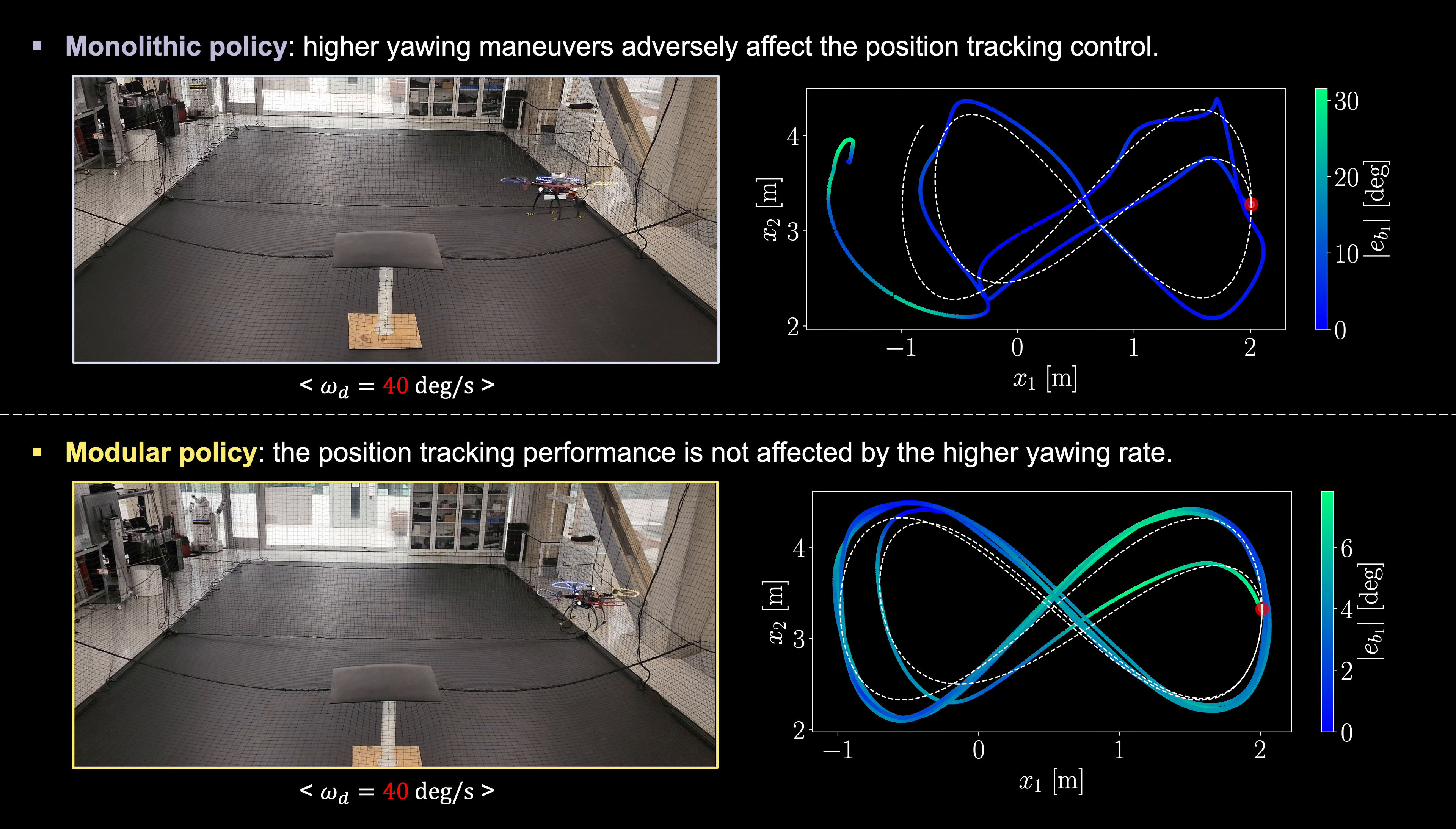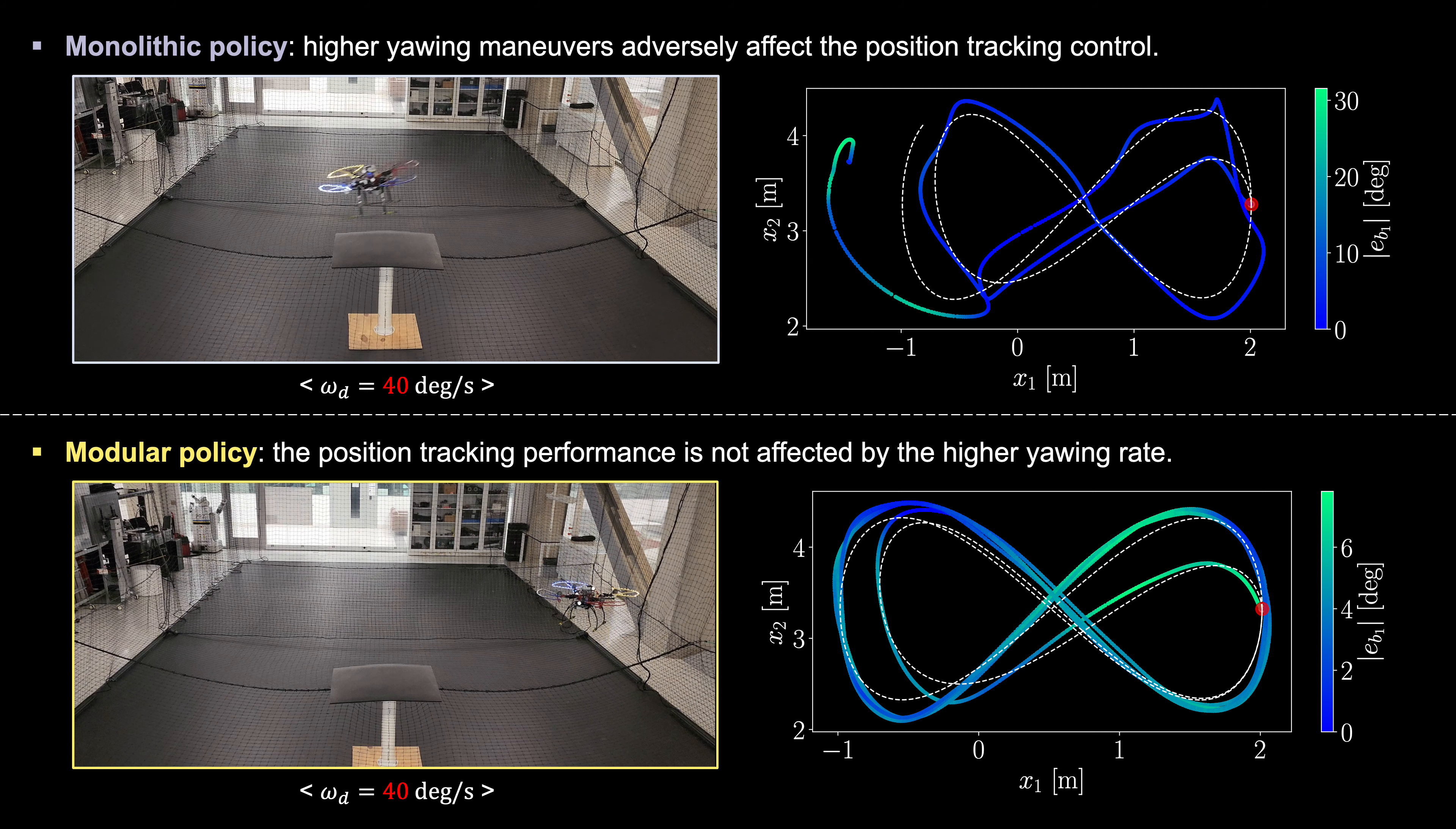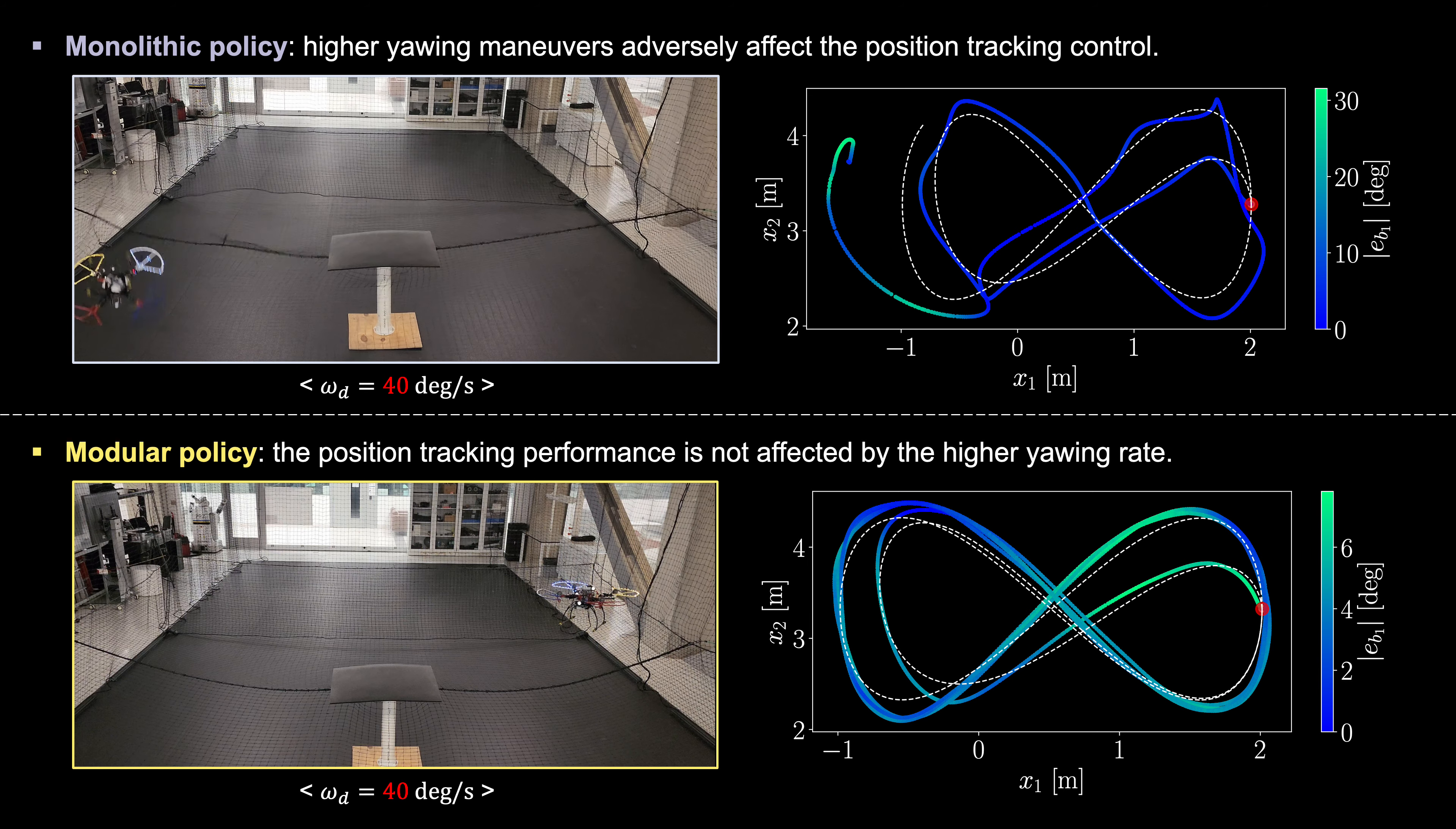However, as the yaw rate increased, such as 40 degrees per second, the monolithic policy's position tracking got worse. This happens because the control of yaw, pitch, and roll is interconnected, meaning that changes in one axis can directly affect the others.